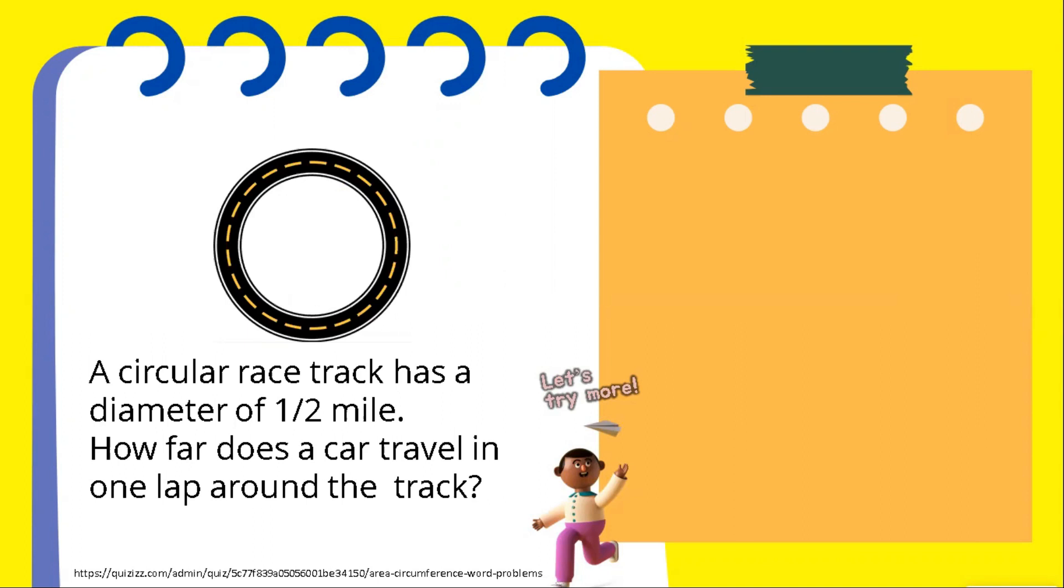And for the third word problem, a circular racetrack has a diameter of half mile. How far does a car travel in one loop around the track? Once again, we will be using the circumference that requires the diameter only.